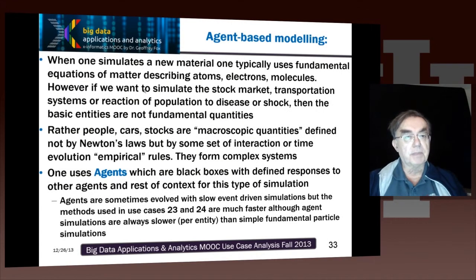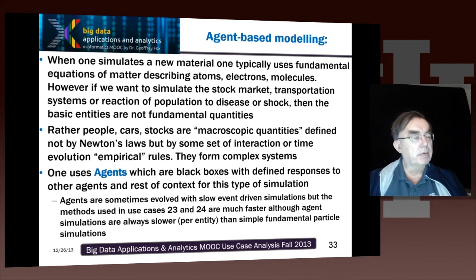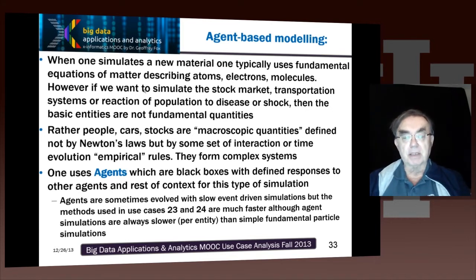We already discussed high performance computing and its importance. There is a class of computing which is typically a little on the edge of high performance computing — that being agent-based modeling. When we were doing material science, we had a nice pretty picture of our new nano material. That uses fundamental Newton's laws, Schrödinger's equation, or Dirac's equation — the fundamental equations of matter — to describe atoms, electrons, and molecules.